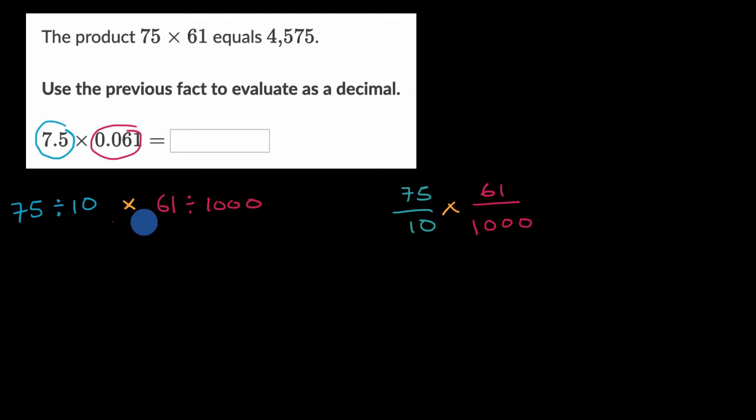Now when we look at it either of these ways, well actually I'll do both of them at the same time. You could change the order of the multiplication and the division here. So you could start with 75 times 61, and then divide that by 10, and then divide that by 1,000. You could do it that way.